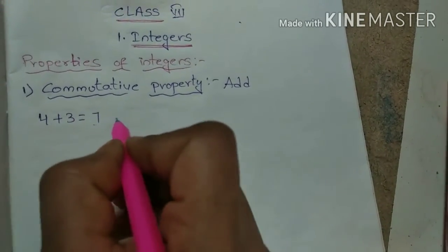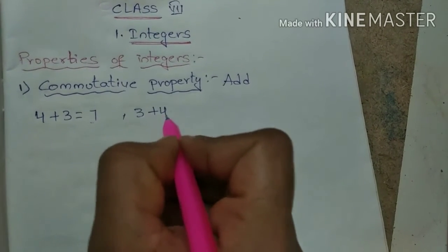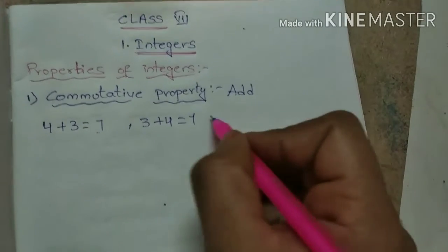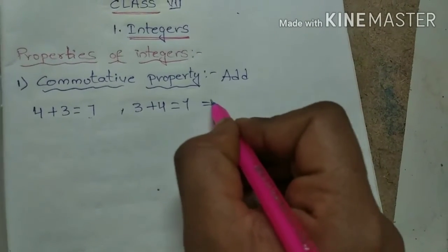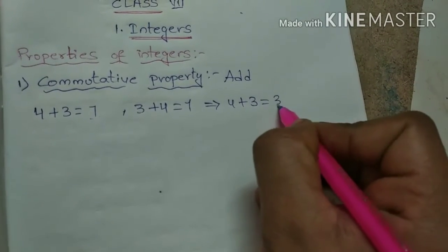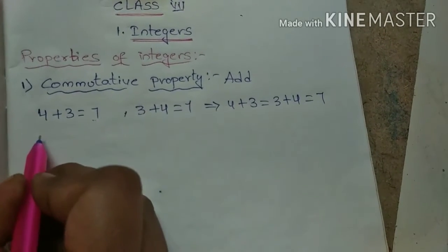4 + 3 equals 7, and 3 + 4 equals how much? 7 only, yes or no? Yes. So what is the main result? Whether we write 4 + 3 or 3 + 4, we get the result as 7. Next, suppose 3 + 5 equals how much?